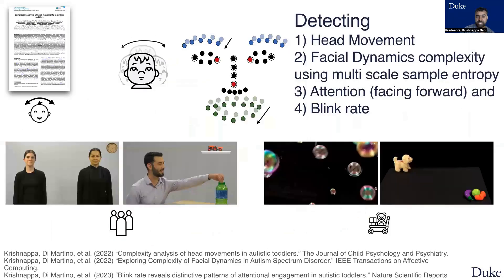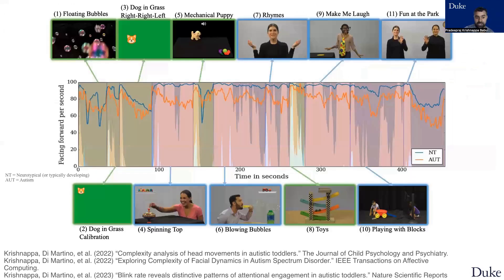In addition to name call response and gaze data, using the landmarks data we also estimate head and facial dynamics and their associated complexity for eyebrow and mouth regions facing forward towards the visual stimuli, as well as the rate of blinking.